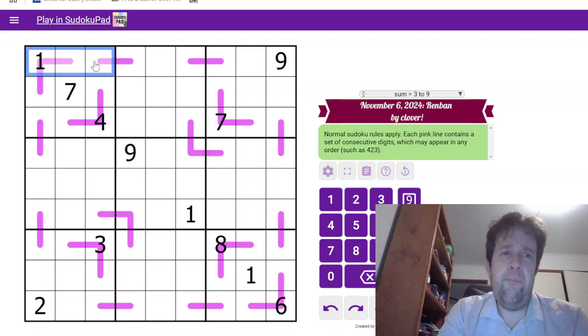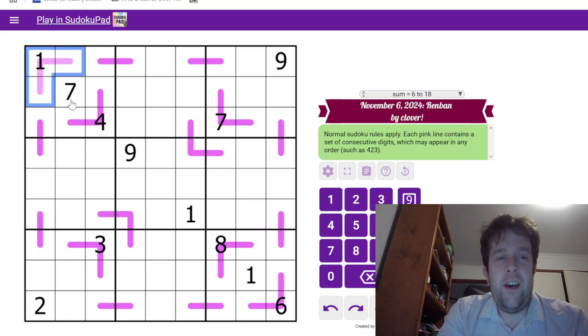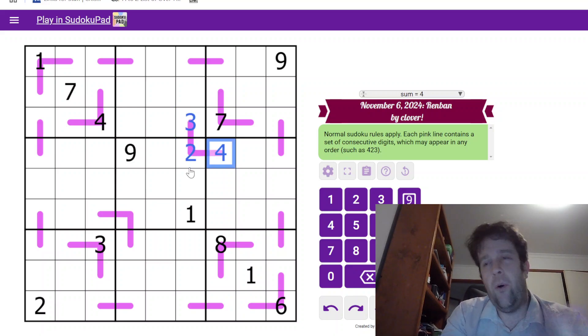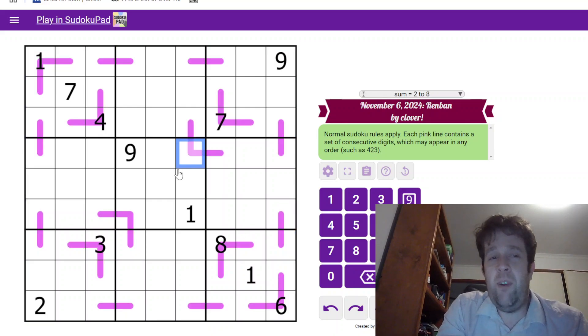Normal Sudoku rules apply. Each box, each row, and each column contain the digits one to nine once each. Now, in the grid, there are purple lines. These are Renban lines. Each pink line contains a set of consecutive digits which may appear in any order. So, this could be three, two, and four. Because two, three, and four are consecutive, but we can make that work however we want. That being said, let's just get into it, man.